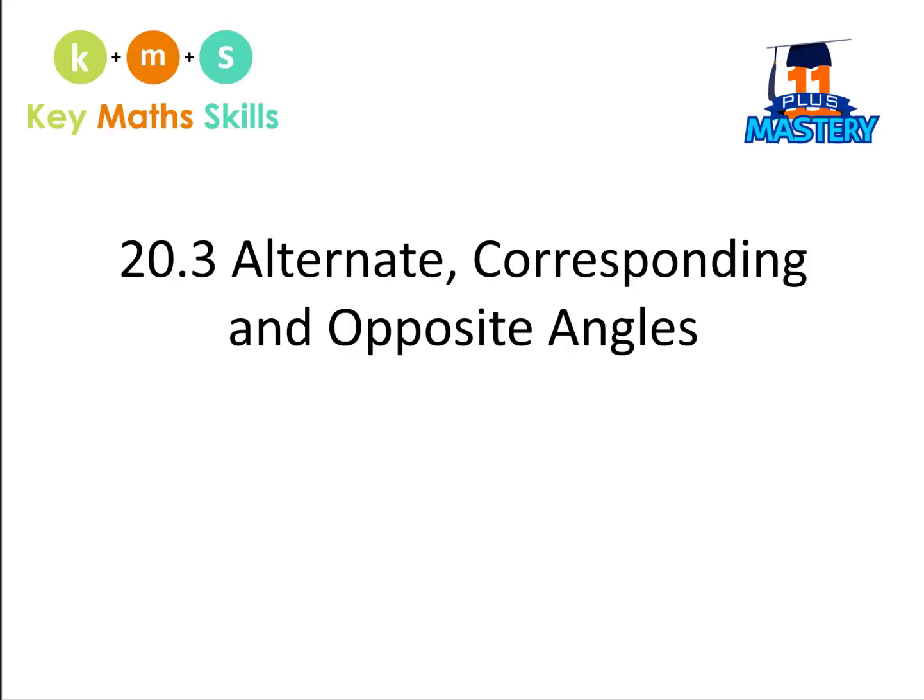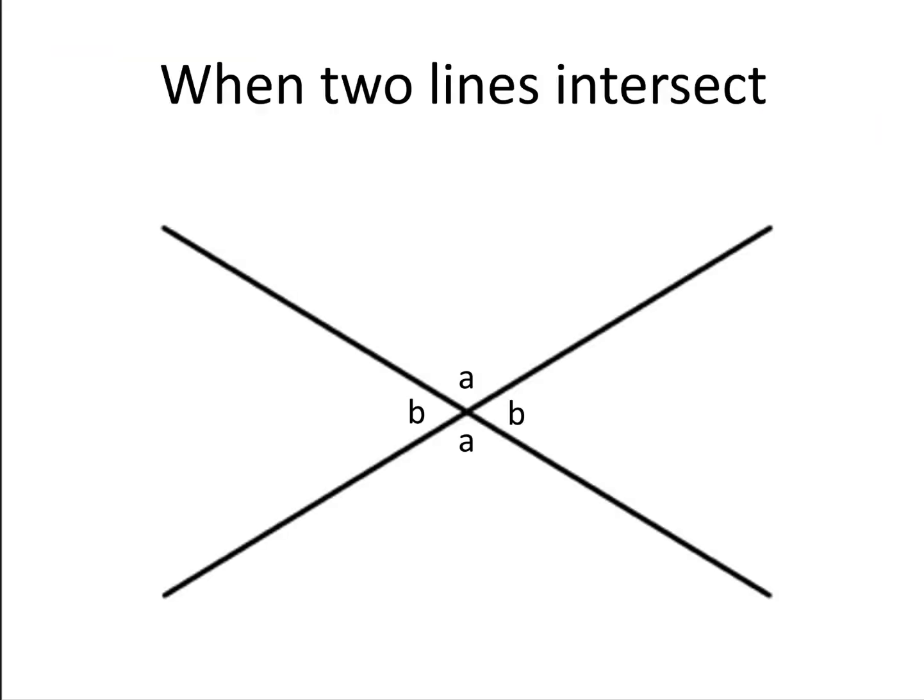Section 3: Alternate, corresponding, and opposite angles. When two lines intersect, four angles are formed, and the opposite angles are always equal. And that's because it's along a straight line. A must be 180 degrees minus B, and B must be 180 degrees minus A. And so we end up with opposite angles being the same.